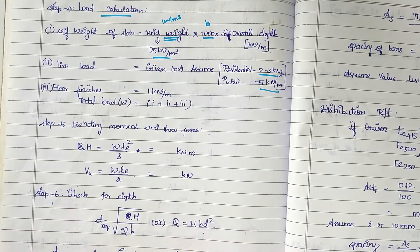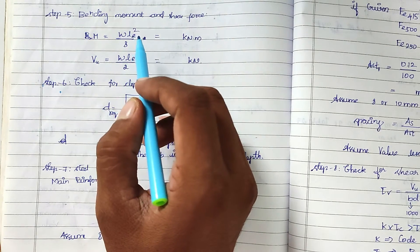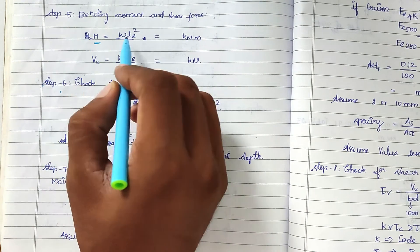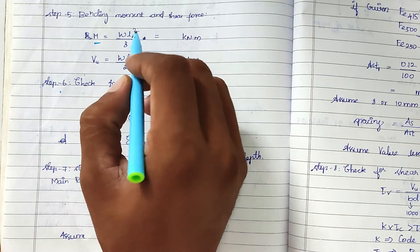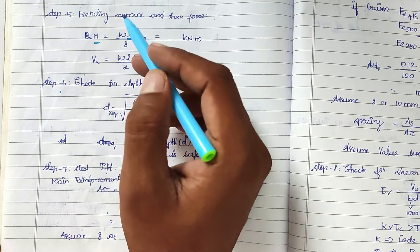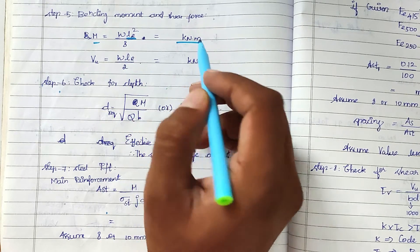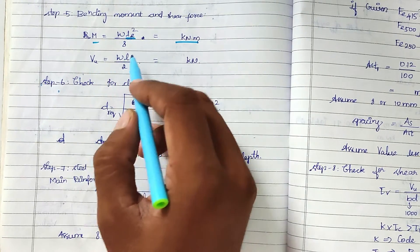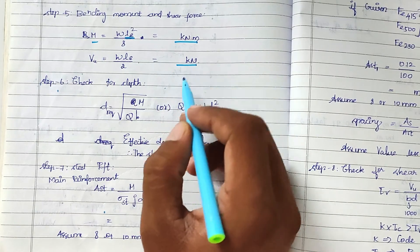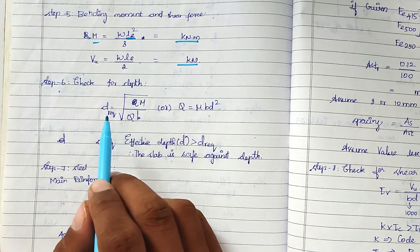After the load calculation, we find the bending moment and shear force. We assume a simply supported beam, so we use the formula M = wl²/8, where l is the effective span and w is the total load. This gives the moment in kilonewton-meters. The shear force is V = wl/2, giving the value in kilonewtons.